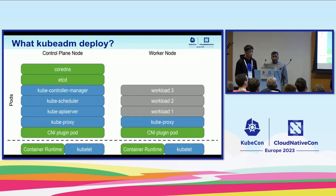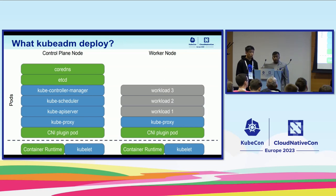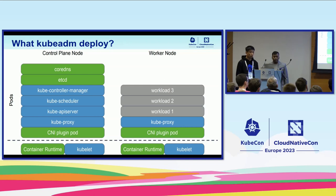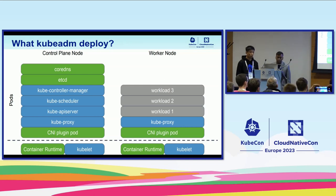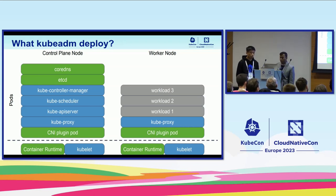CoreDNS will not work unless you apply the CNI. What does kubeadm deploy? On the control plane nodes, it deploys the API server, controller manager, etcd, and CoreDNS. As mentioned, you also need to install the CNI plugin. On the worker node, you need to install kube-proxy as well as the CNI plugins.